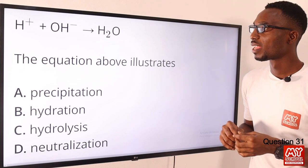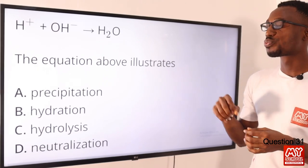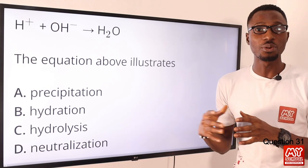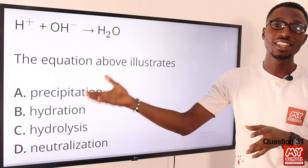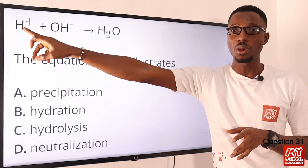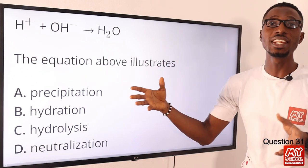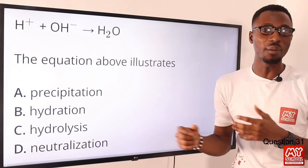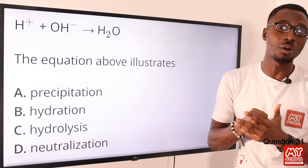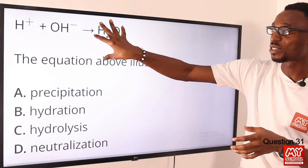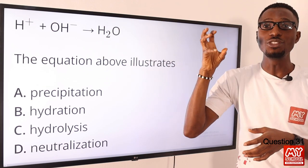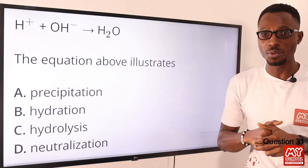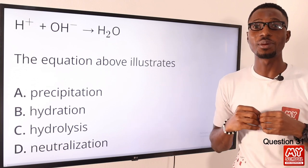Question 31. The equation above illustrates what? If you recall your HCl and your sodium hydroxide — the HCl is where you have your H⁺, and from your NaOH that's where you have your OH⁻. We know that is the reaction between an acid and a base, and what you get is salt and water only. So we have the water right here — this is definitely a neutralization reaction. We find that in option D, so option D is the correct option.